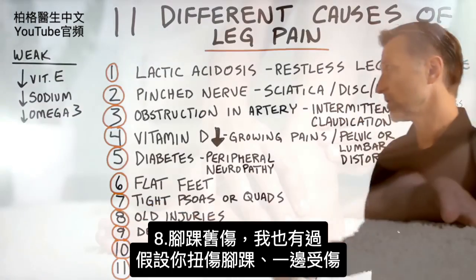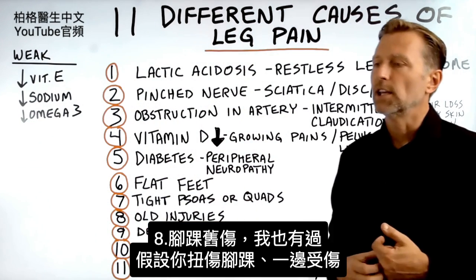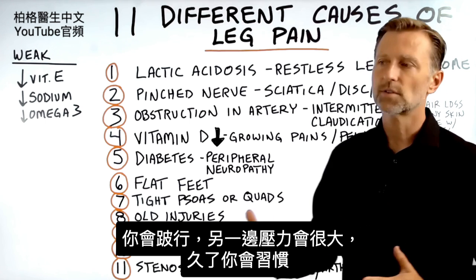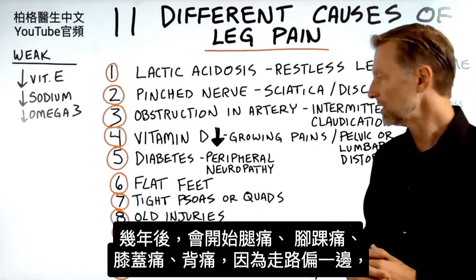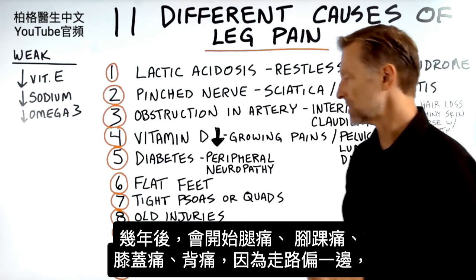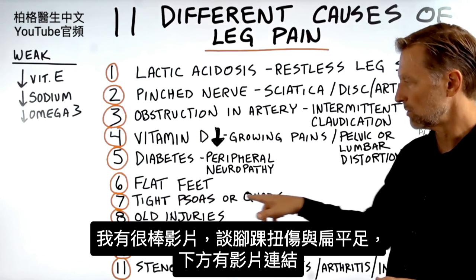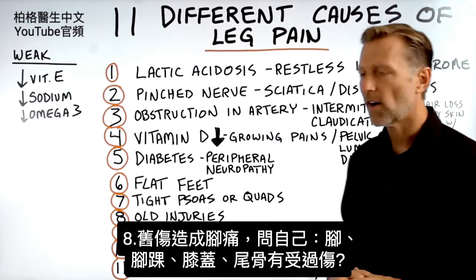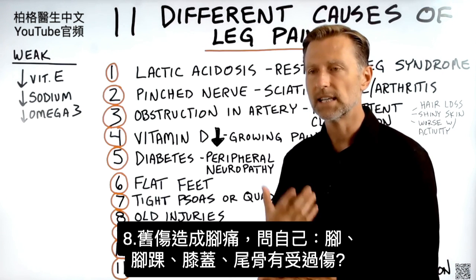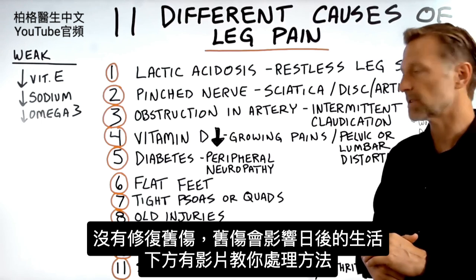Number eight: old injuries — particularly to your ankle. If you sprained or broke your ankle on one side, you're going to limp and put pressure on the opposite side, walking differently and adapting to that. One, two, three years down the road you'll notice leg pain, ankle pain, knee pain, or back pain — because your gait has been compensating. Ask yourself: have you ever had any ankle, foot, or knee injuries? Have you ever fallen on your tailbone? Those can come back to haunt you if you don't know how to fix them.